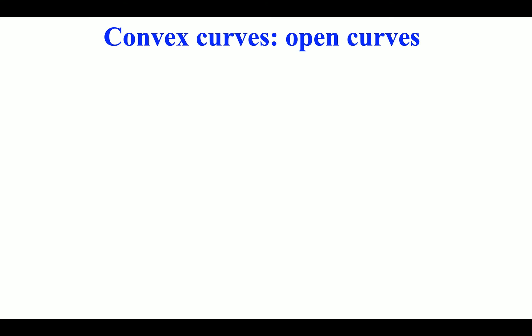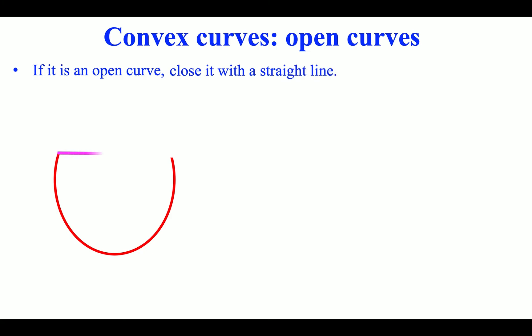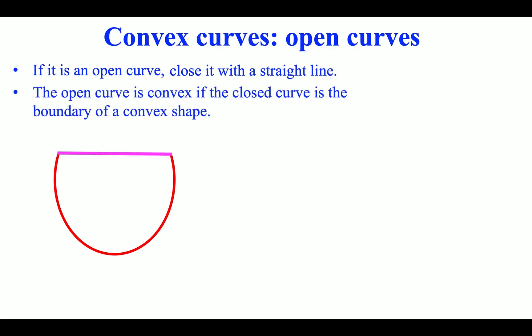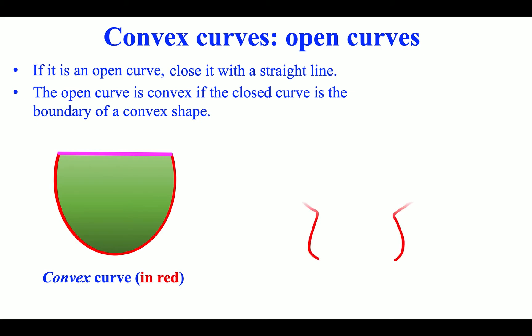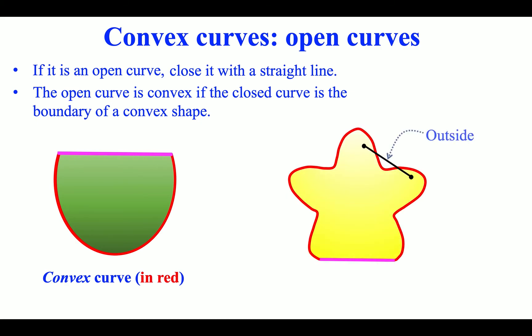For convex curves: if it is an open curve, close it with a straight line. The open curve is convex if the closed curve is the boundary of a convex shape, shown in red. A non-convex curve is also shown in red.